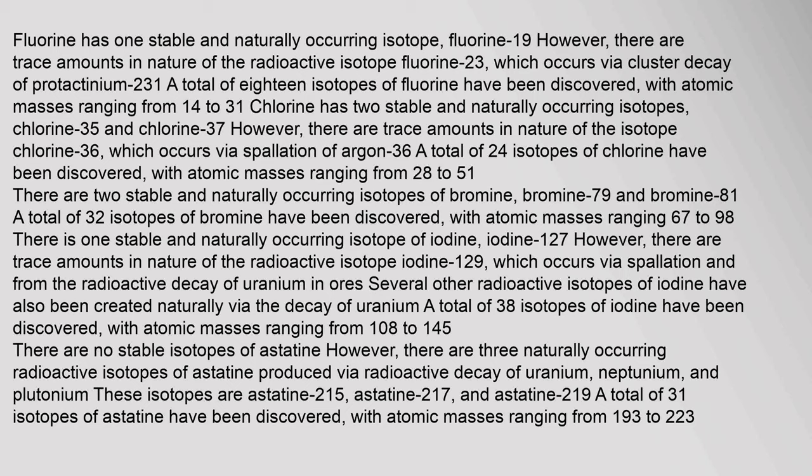Isotopes: Fluorine has one stable and naturally occurring isotope, fluorine-19. However, there are trace amounts in nature of the radioactive isotope fluorine-23, which occurs via cluster decay of protactinium-231. A total of 18 isotopes of fluorine have been discovered, with atomic masses ranging from 14 to 31. Chlorine has two stable and naturally occurring isotopes, chlorine-35 and chlorine-37. There are also trace amounts of chlorine-36, which occurs via spallation of argon-36. A total of 24 isotopes of chlorine have been discovered, with atomic masses ranging from 28 to 51.